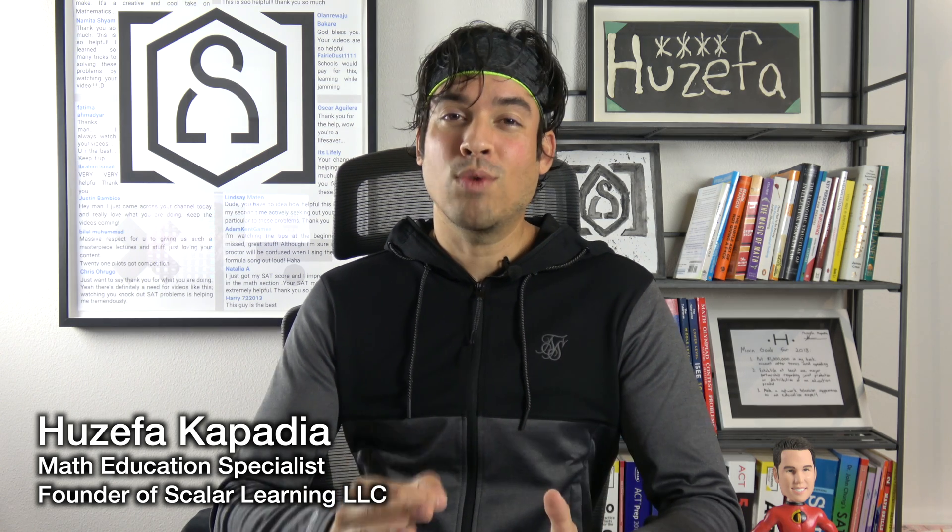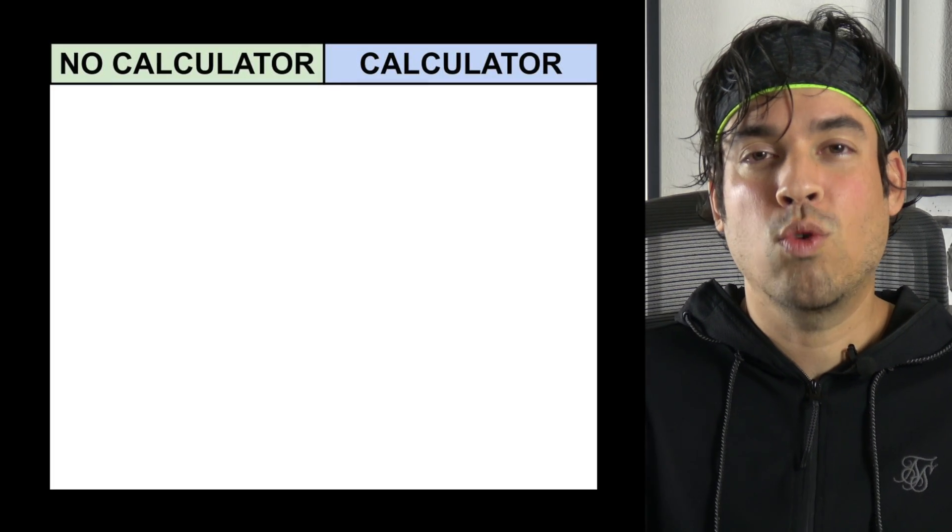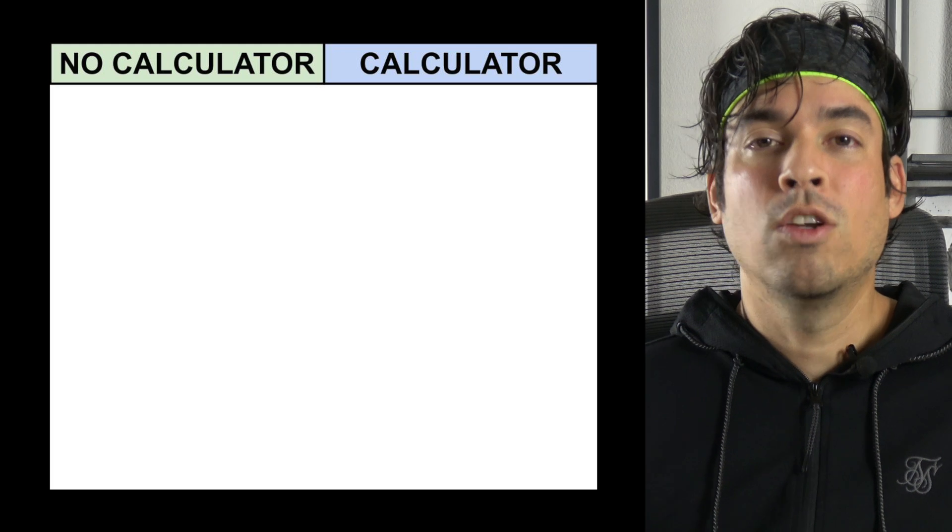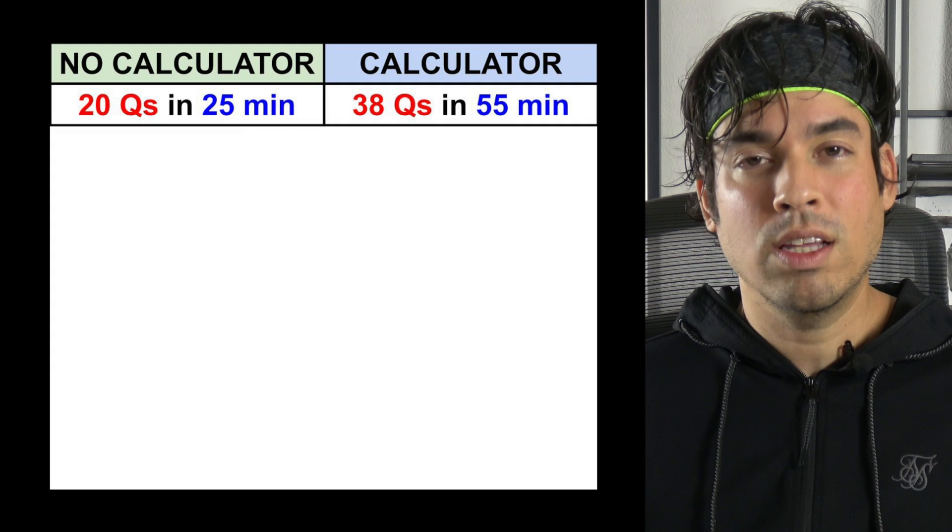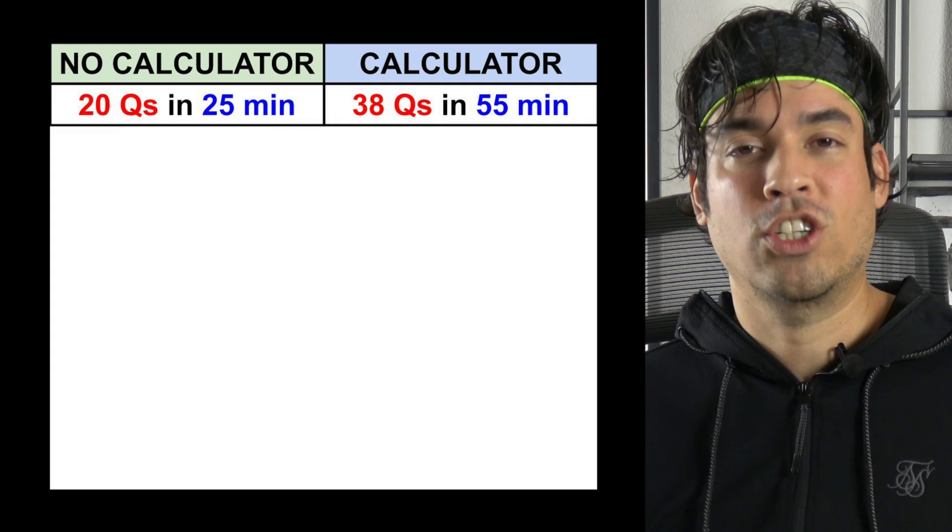Math portion, meaning how do I get through all of the test questions in the allotted time. First let's break down both of the sections in terms of the amount of questions and the amount of time given. So on the no calculator section we have 20 questions in 25 minutes and on the calculator section we have 38 questions.